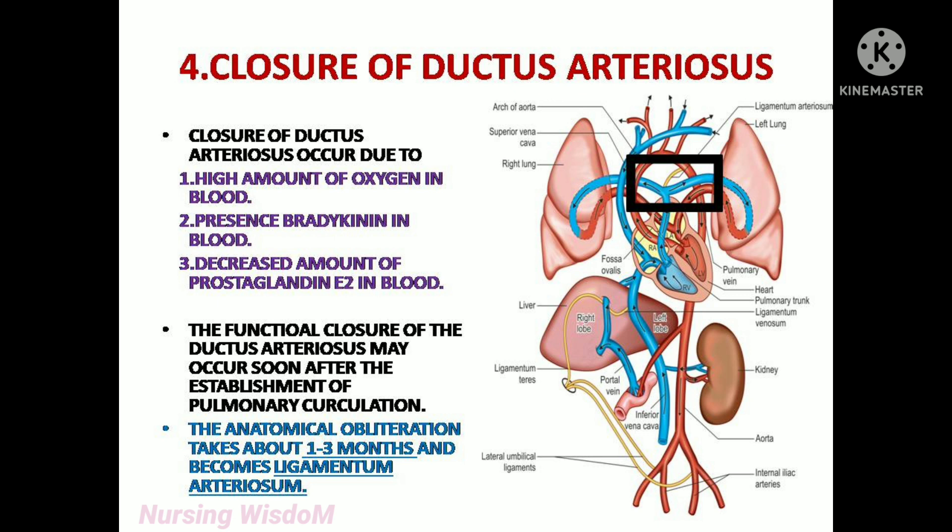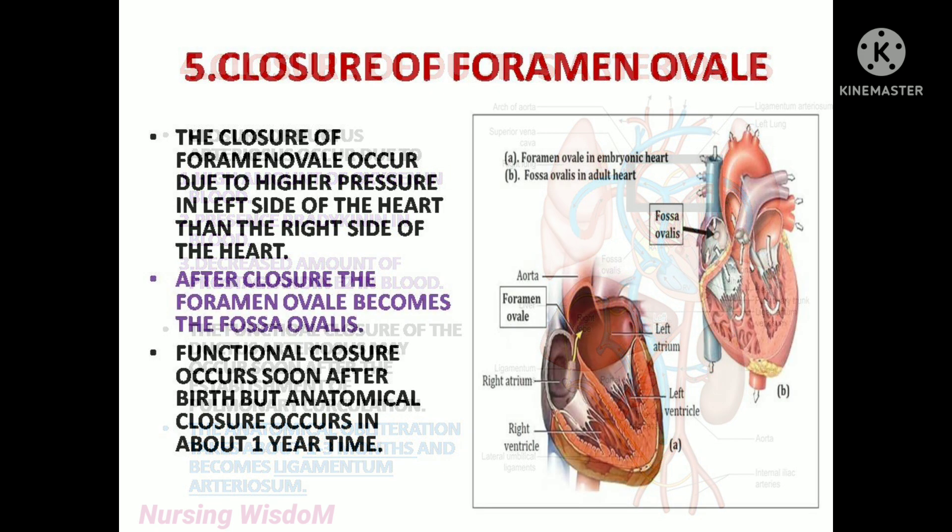The functional closure of the ductus arteriosus may occur soon after the establishment of pulmonary circulation. The anatomical obliteration takes about 1 to 3 months and it becomes the ligamentum arteriosum.